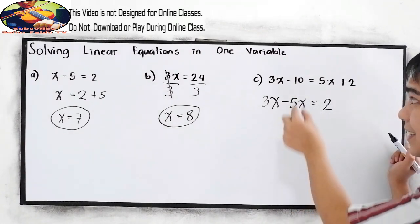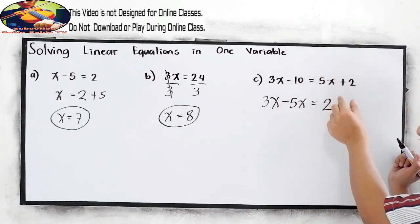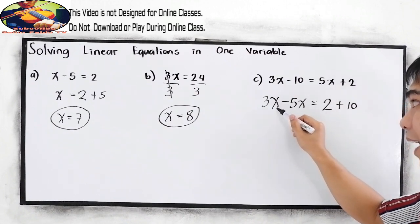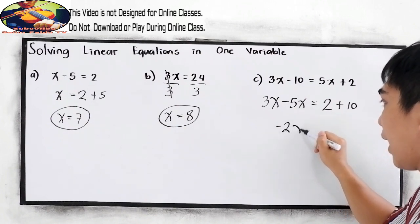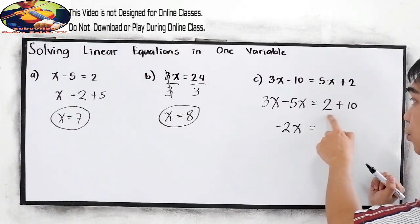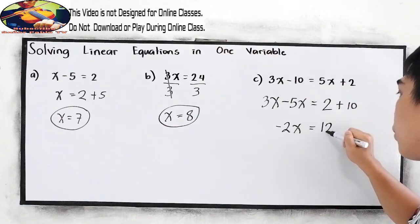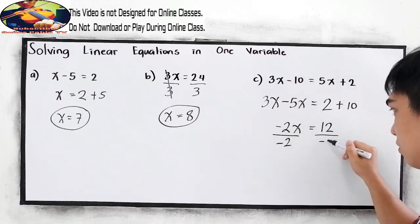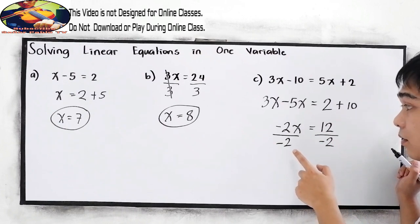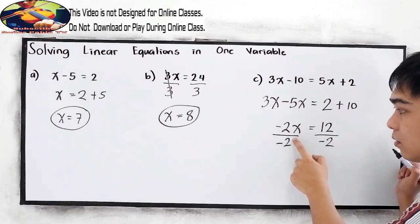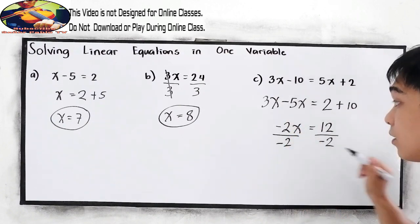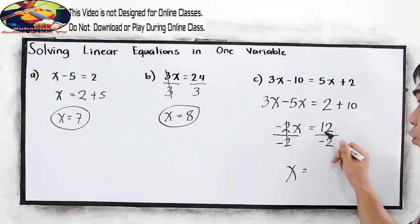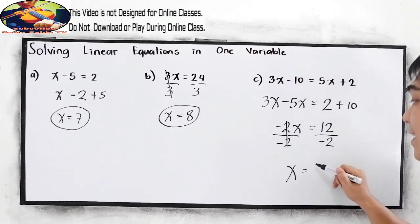Copy 2. The negative 10 — move it to the right, which gives us positive 10. Now, 3x minus 5x is negative 2x, and this is equal to 2 plus 10, which is 12. To find x, we divide by negative 2. So x is equal to 12 divided by negative 2, which is negative 6.